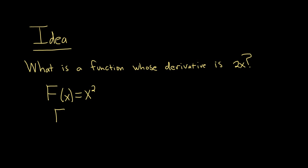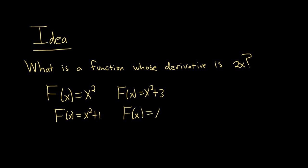You might say, well what about big F of x equals x squared plus 1? That is also a function whose derivative is 2x. Likewise, we can look at big F of x equals x squared plus 3. In fact, we can take any number. We can look at big F of x equals x squared plus C, where C here is a constant. So there are infinitely many functions whose derivative is 2x.